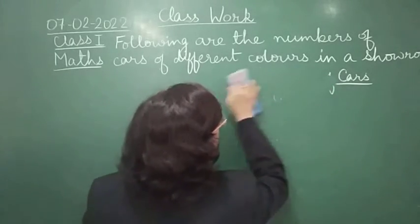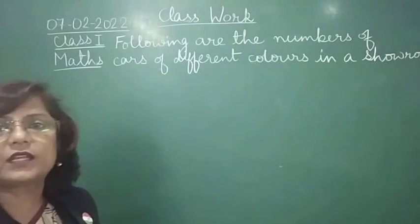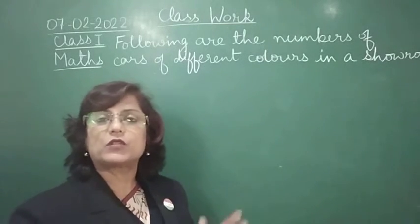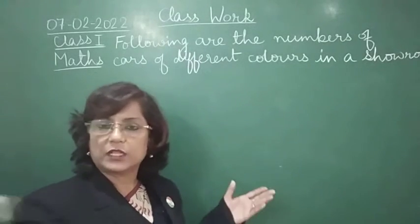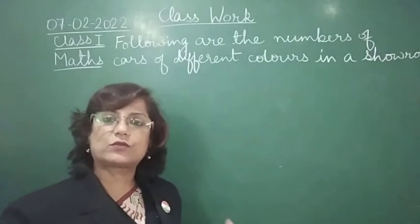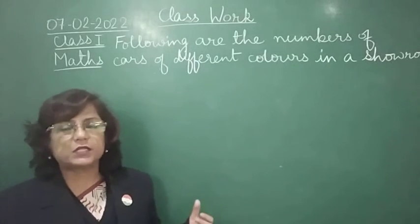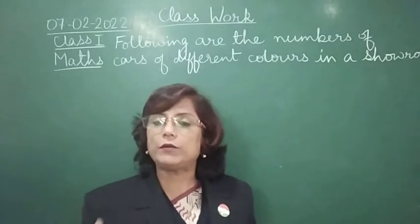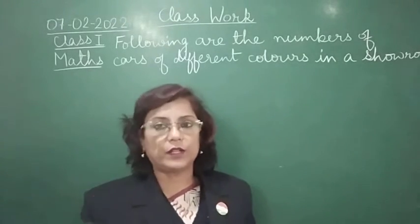Here I have not used pictures. In most of the exercises we used pictures, but here I have written numbers directly because the numbers are a little more. If we take one symbol for one, then more pictures would be needed. It is not necessary to use one symbol for one — we can take one symbol for two, three, four, five, or even ten, depending on the data. But since we have been doing one symbol stands for one, I have just written the numbers here.